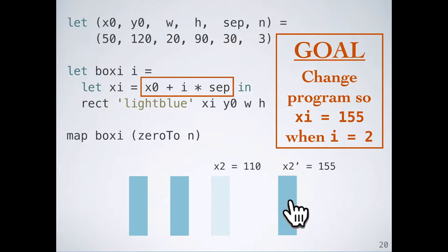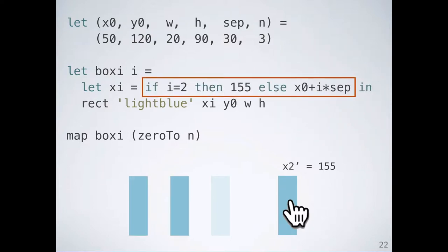What should we change? There's a lot of options for how we might change the program, and each of them is going to have a different effect on the other boxes. We might introduce a branch saying that if the index is 2, use 155. Otherwise, use the old equation.